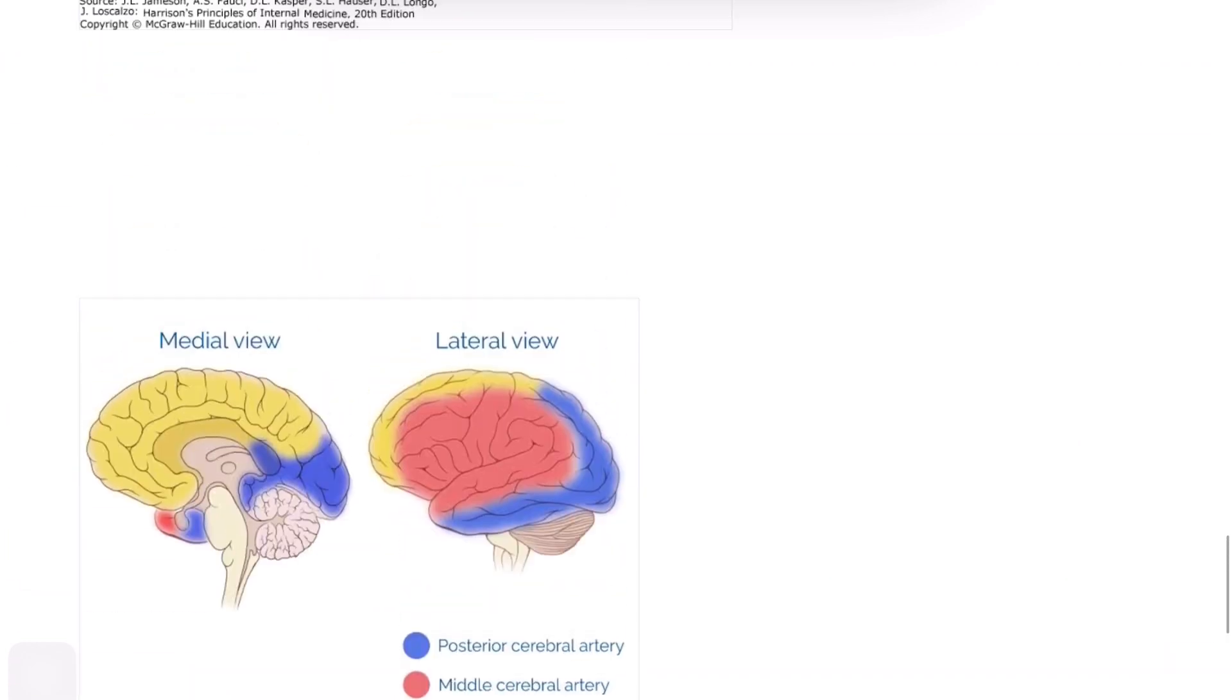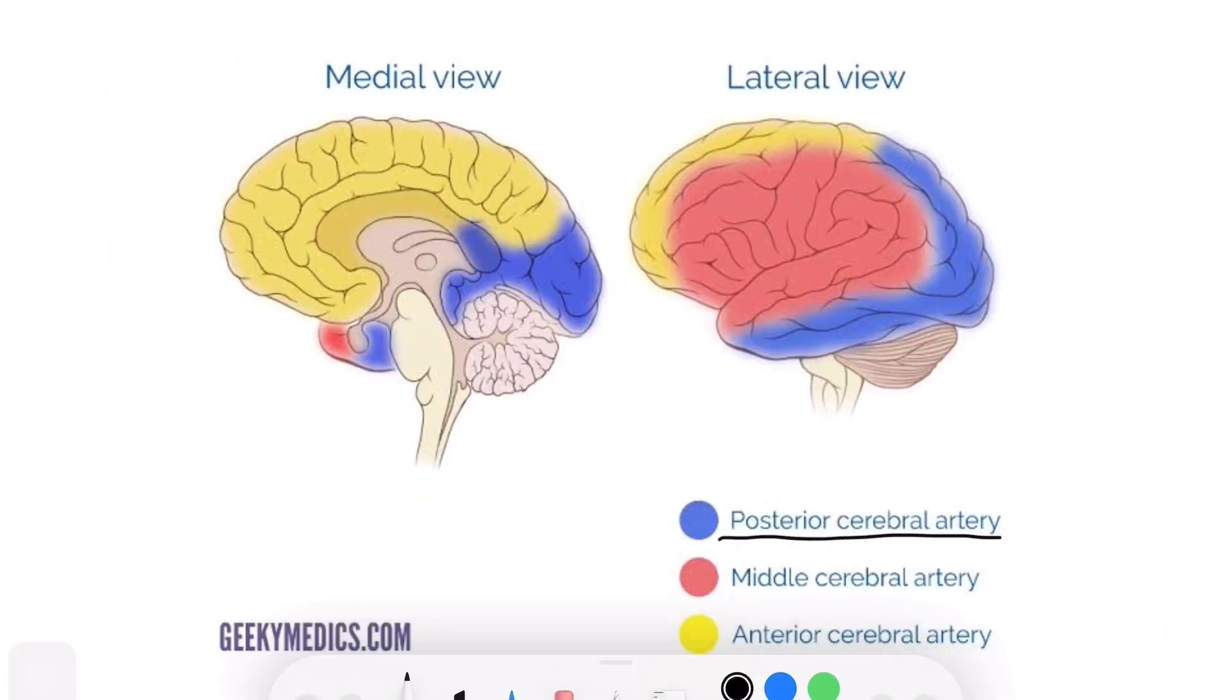PCA occlusion is due to atheroma or emboli which lodge at the top of the basilar artery. Two syndromes are seen in PCA occlusion: P1 and P2. P1 involves the midbrain, subthalamic, and thalamic nucleus. P2 involves the temporal and occipital lobes.